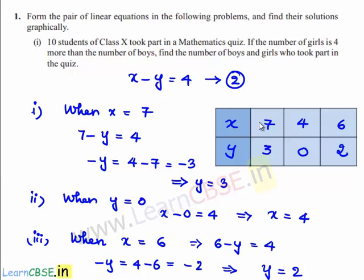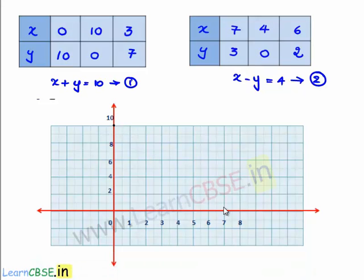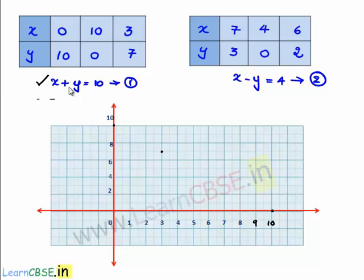By using these tabular forms we will plot a graph and find the values of x and y. The first equation is x plus y equals 10. The coordinates are 0 comma 10, 10 comma 0, and 3 comma 7. Let us plot these points in the graph. The first point 0 comma 10 is here; the second point is 10 comma 0; and the third point is 3 comma 7. We must join these three points to get the straight line x plus y equals 10. The black points correspond to the line x plus y equals 10.